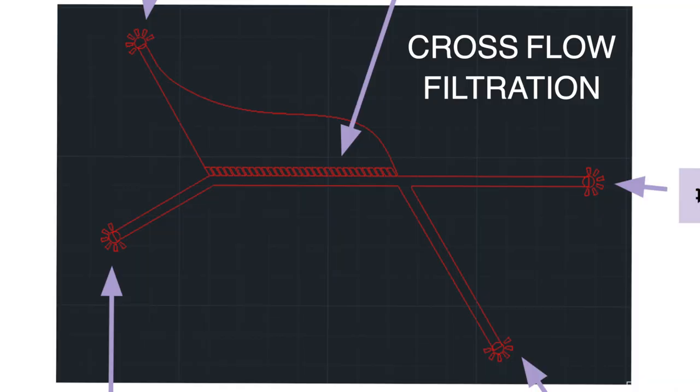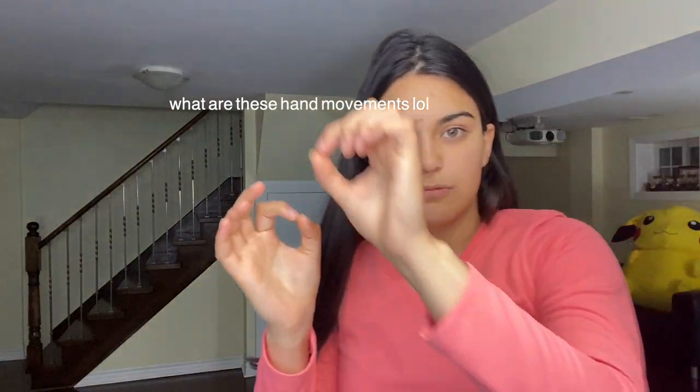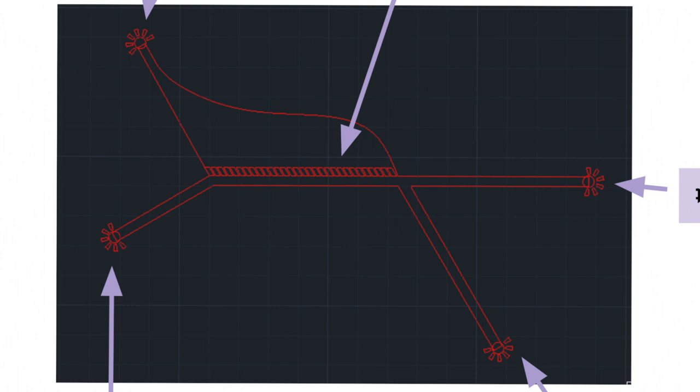The second approach we decided to use is called cross-flow filtration. You put in the cells on one side and a buffer on the other, so the liquid pushes the cells upward. Over here you have pillars. If the cells are small enough to pass through the pillars, they'll end up on the other side where there's a collection tube. If they can't go through the pillars, they're too big — they'll go straight and end up in the bottom catching container.